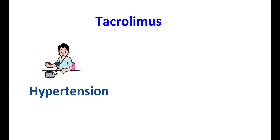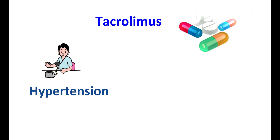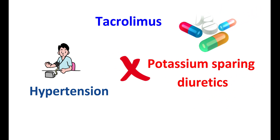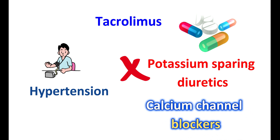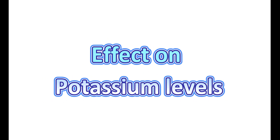Effect on blood pressure: Tacrolimus can cause hypertension. This raised blood pressure can be controlled by use of a few antihypertensives. However, potassium-sparing diuretics should be avoided with tacrolimus. Similarly, when calcium channel blockers are used, the dose of tacrolimus should be adjusted.